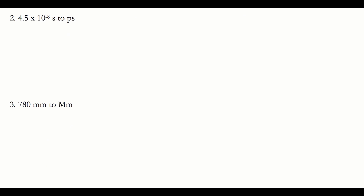Here I'm given 4.5 times 10 to the negative eighth seconds. I write my given first, then put what I want to get out of — seconds — on the bottom so the seconds cancel. I put what I want to get into — picoseconds — on top. Looking at the table, one picosecond is 10 to the negative 12 seconds.